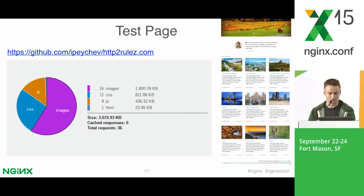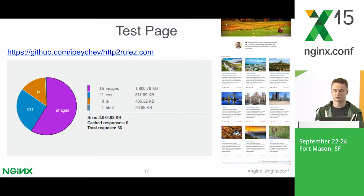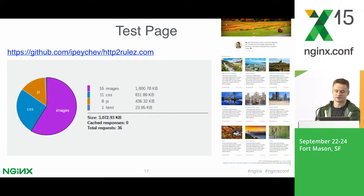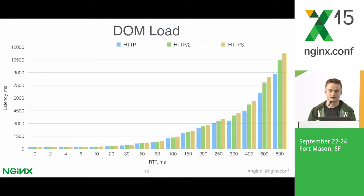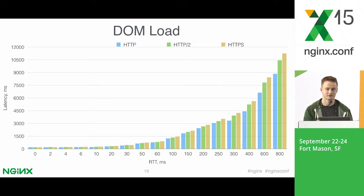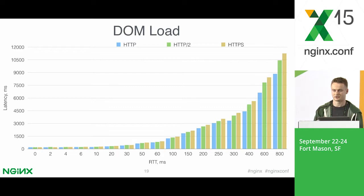Let's move to practice. In order to understand how HTTP/2 works under different network conditions, I've done some benchmarks. I took a typical web page — an HTTP/2-related page I found on GitHub — and you can see how many resources it has and how large it is. I think it's pretty representative. Here's my test environment, in case you'd like to reproduce the test. Here are the results: I simulated different network latencies and measured the DOM loading time, which is the full page loading time when all resources are loaded.